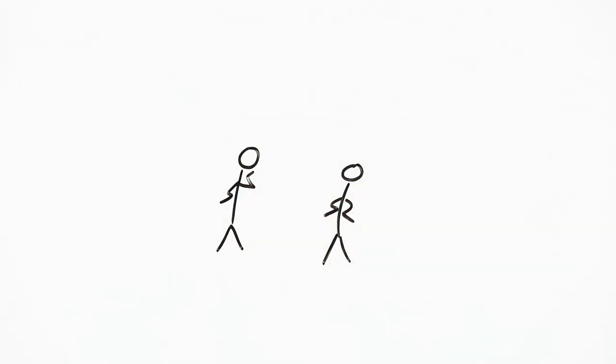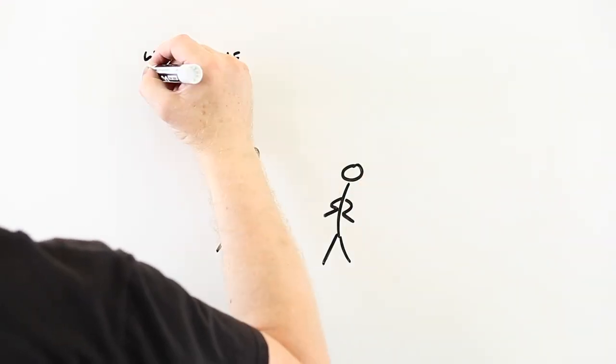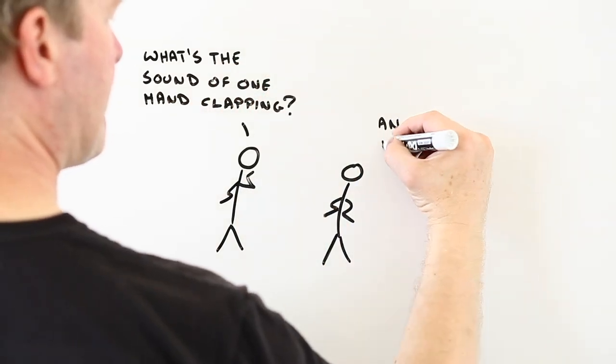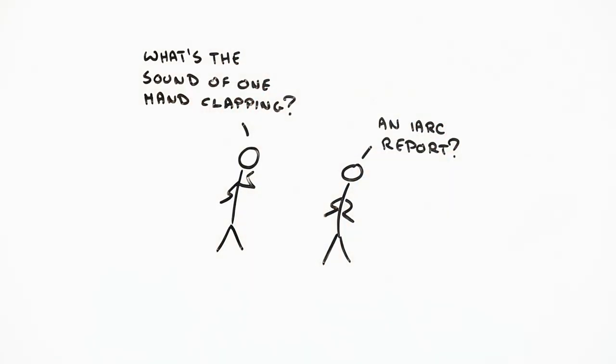The trouble is, just providing information on the possibility of something bad happening and not saying anything about the probability is about as useful as a one-handed clap. Not very.